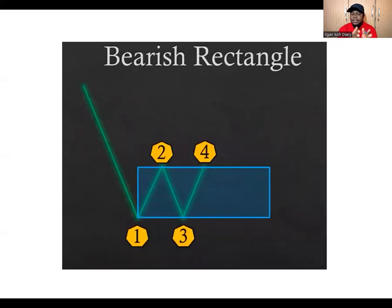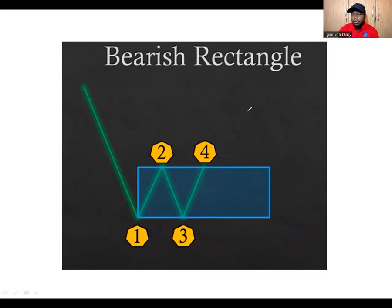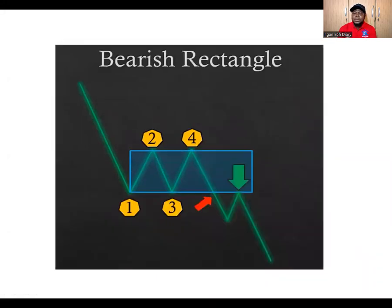Now let's look at the bearish side. In a bearish trend, once you see a break back to the downside and a retest, you wait for the prints in terms of price action, then enter your sell. The bearish rectangle — you'll see it often, especially when trading gold, but really in any trending market. This is one of the patterns you must watch out for; it signifies a continuation of the bearish trend.